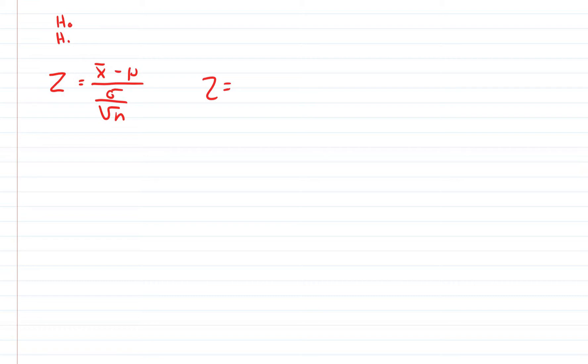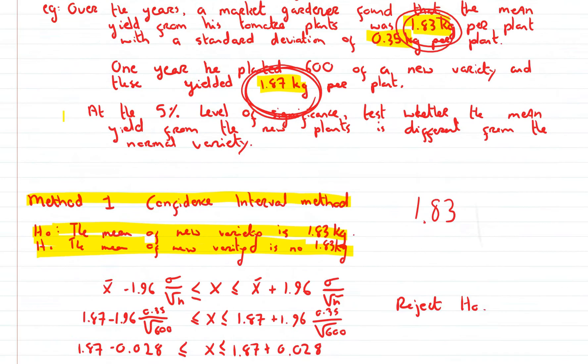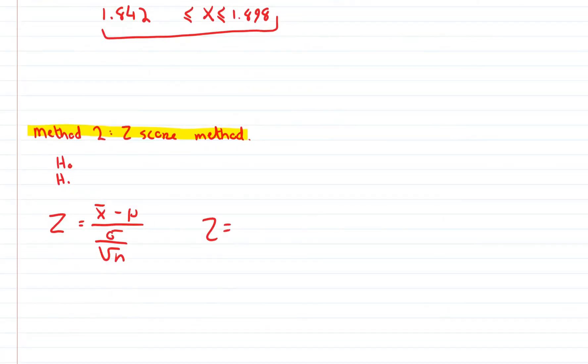So z equals our mean, which is, when I say our mean, the mean of the new tomatoes, which is 1.87.